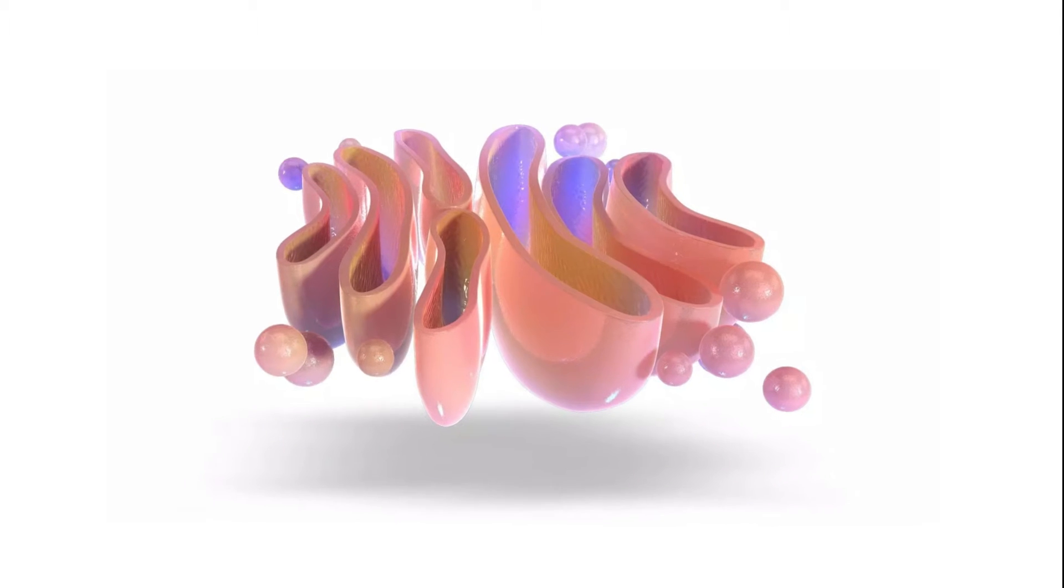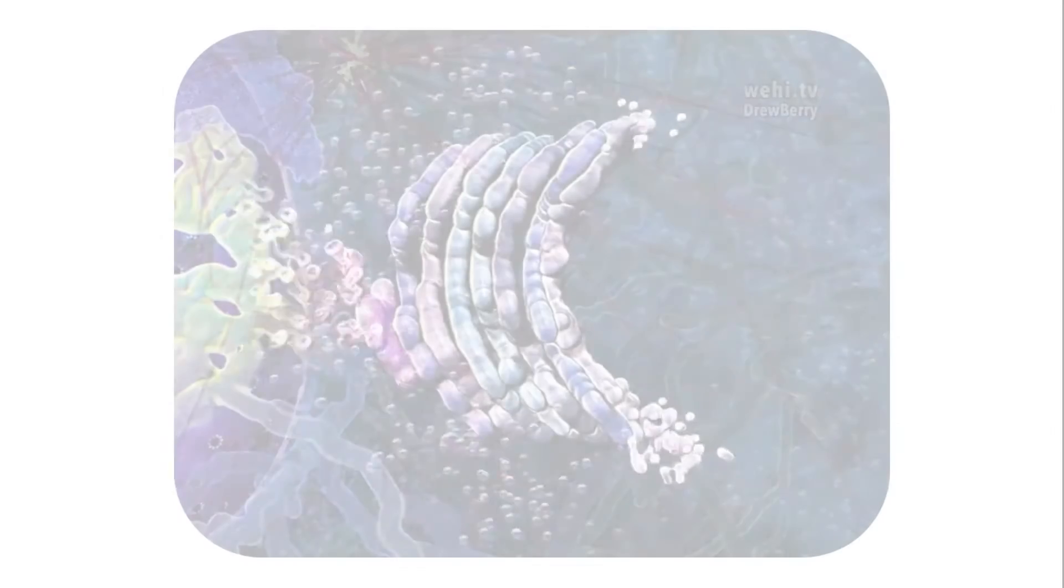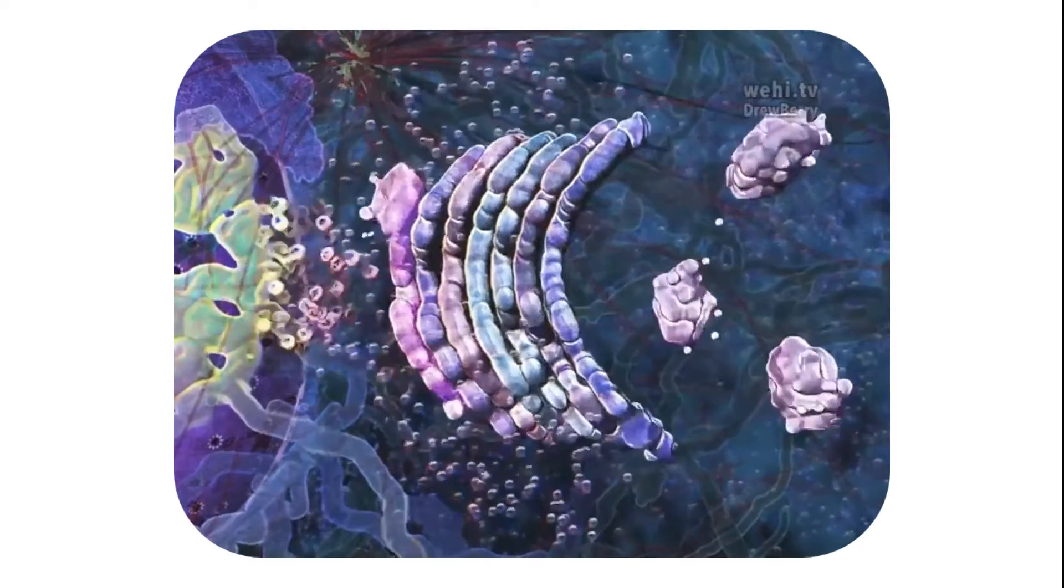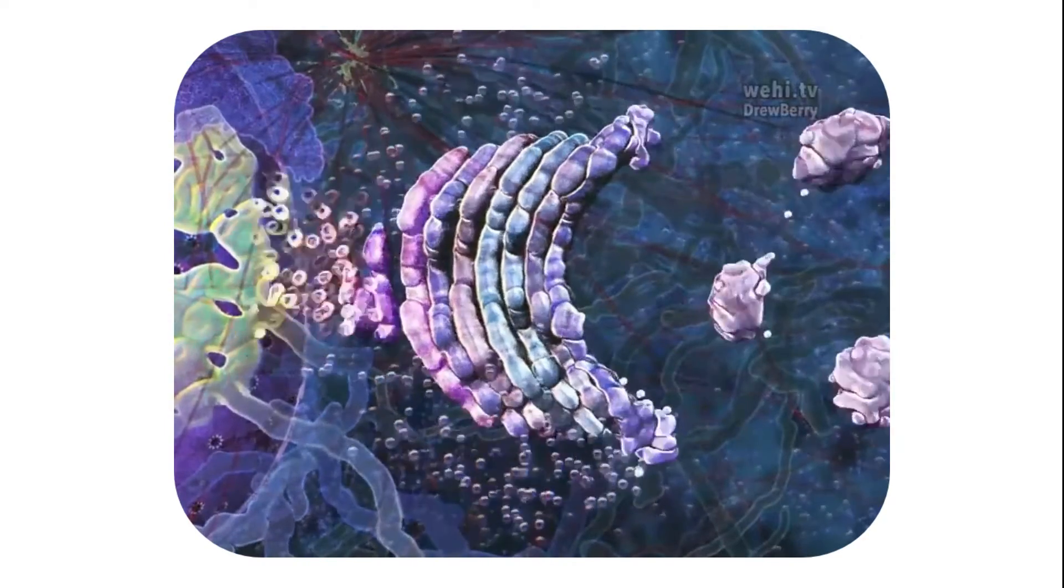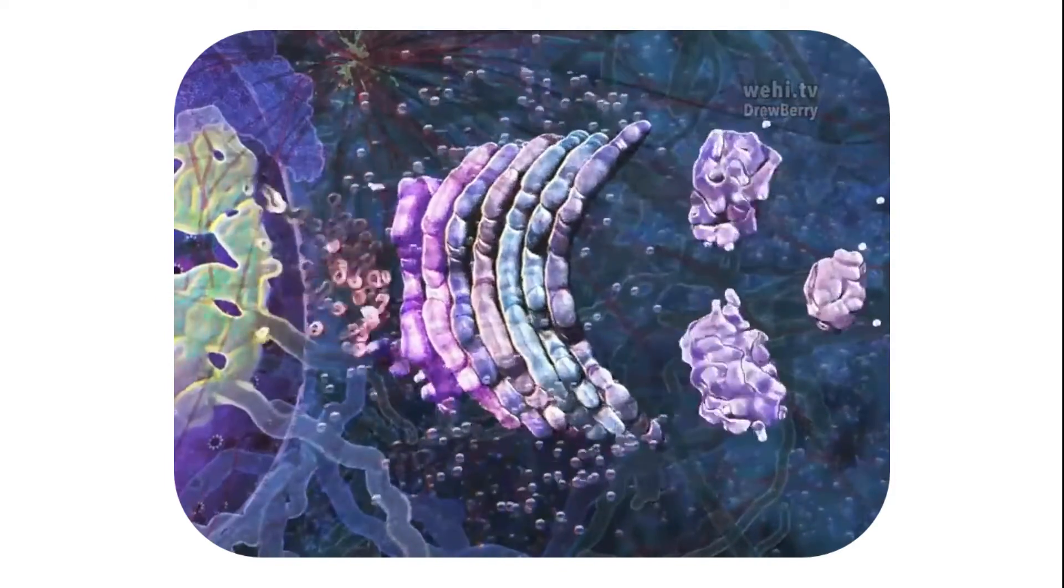Vesicle formation and sorting. The Golgi apparatus plays a crucial role in the formation of transport vesicles, small membranous sacs that carry molecules from one cellular compartment to another. It acts as a sorting center where proteins and lipids are packaged into specific vesicles destined for various locations within the cell or for secretion outside the cell.